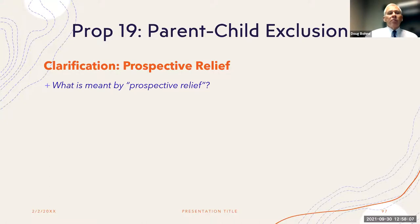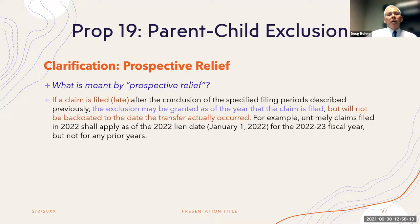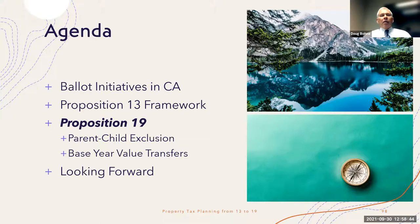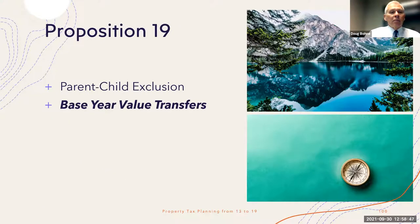One last comment regarding prospective relief: if you do not qualify or do not submit documentation in time, you may not be able to recoup what you have paid in the past. However, you can still qualify prospectively going forward, and they would reduce the tax base to lower your property taxes. But if you are beyond the three-year period, they will not allow you to recover past taxes. I'll now turn the time over to Kevin to talk about base year value transfers.